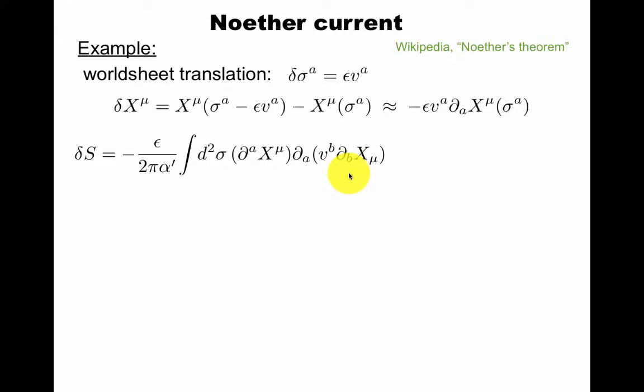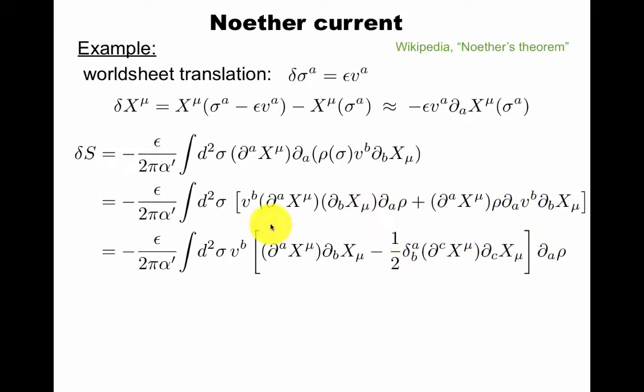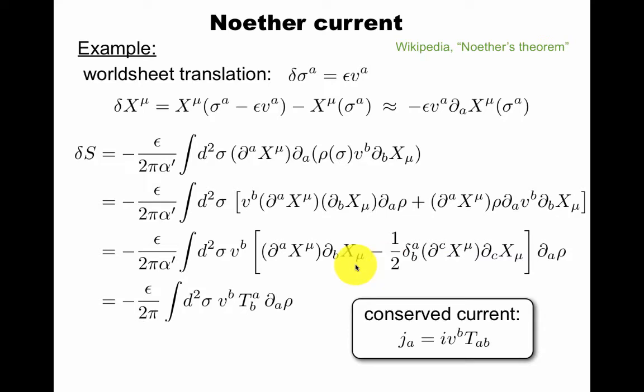Now let's deform. We're going to put in this rho we had before. We're going to allow rho to depend on the coordinates, and act with this derivative. So we get two terms, and then we can use a trick that we rewrite this derivative of v using a Kronecker delta, so we can factor out dA rho. Now we have some object here that we're going to call the stress energy tensor. The symmetry current that we read off from this manipulation is jA is i times vB tAB.